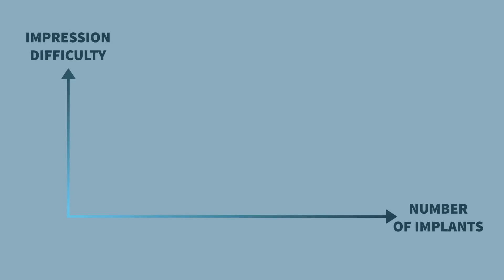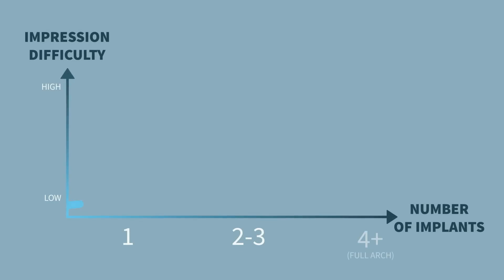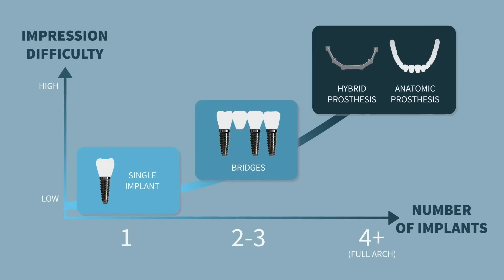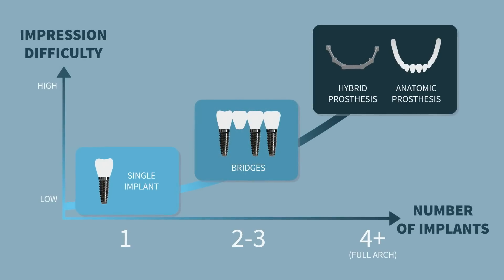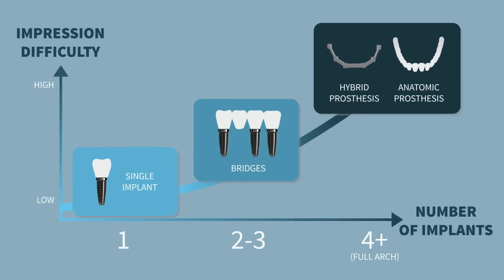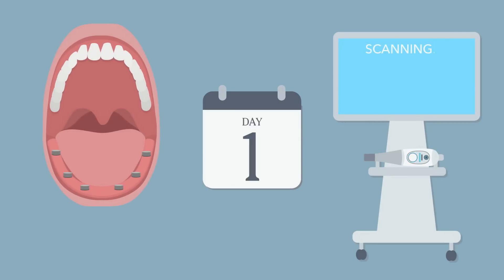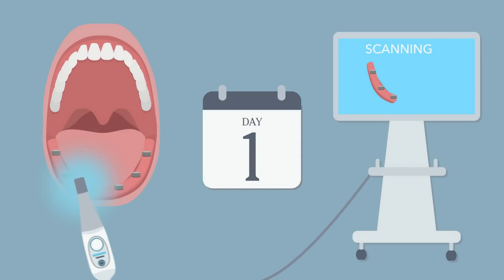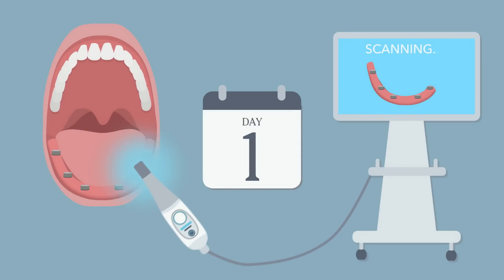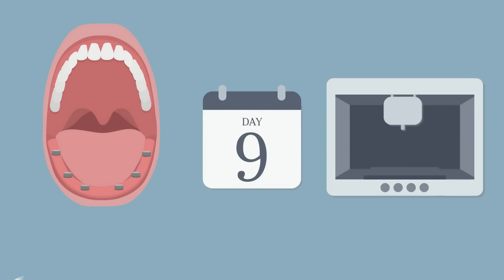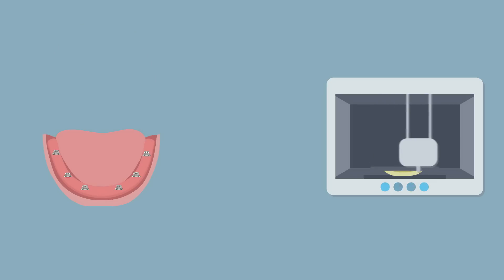In implant rehabilitations, the difficulty of taking a precise impression increases with the number of implants to be captured and their angulations. In multiple implant cases, the process is complex because the reliability of each step depends on the previous one, and 3D printers and scanners have accuracy limitations.